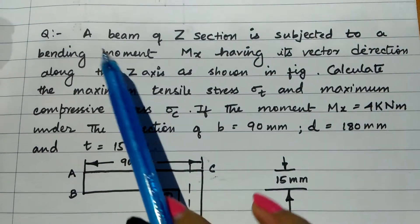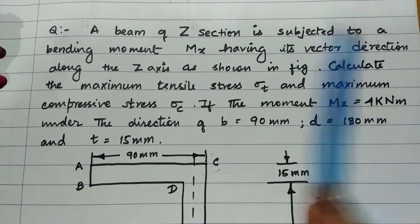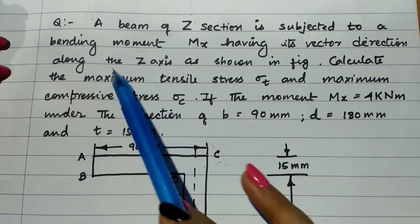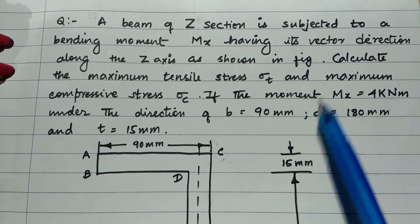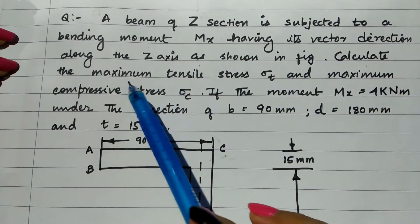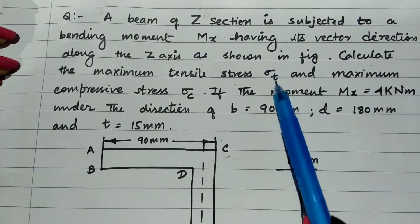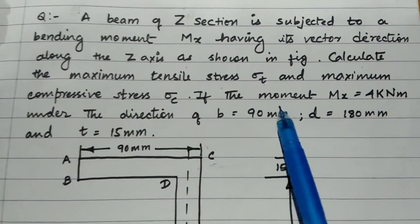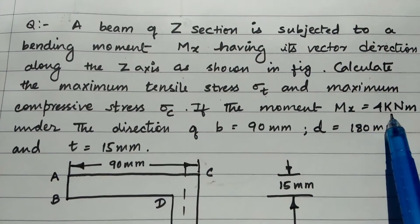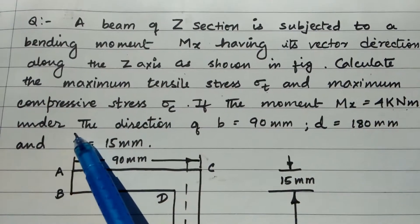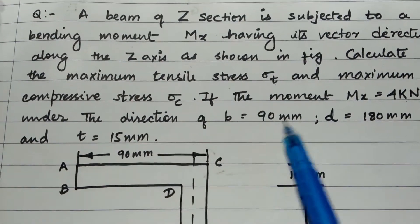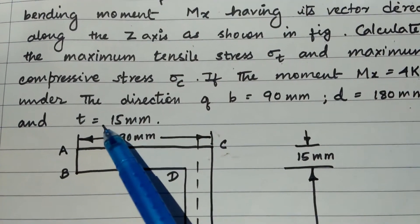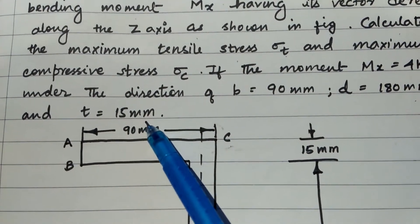Let me read the question: a beam of Z-section is subjected to a bending moment Mx having its vector direction along the Z axis. Calculate the maximum tensile stress sigma-T and the maximum compressive stress sigma-C, given Mx equals 4 kN·m, B equals 90 mm, D equals 180 mm, and thickness T equals 15 mm.